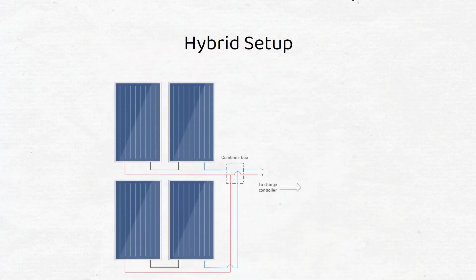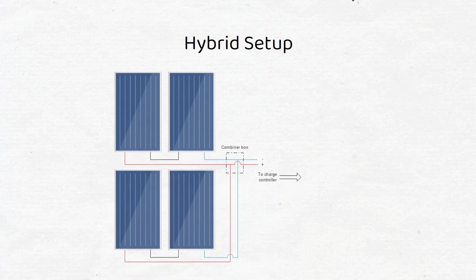A hybrid setup, also called series-parallel setup, combines series and parallel connections. This can be useful on a boat. If you have a total of 4 panels, place 2 panels on port and 2 on starboard. You would then wire 2 in series and then combine both of the series strings in parallel.